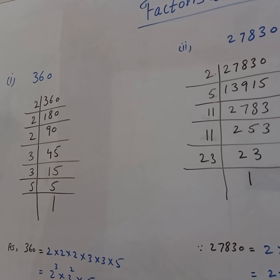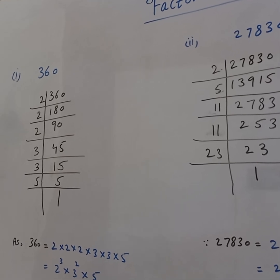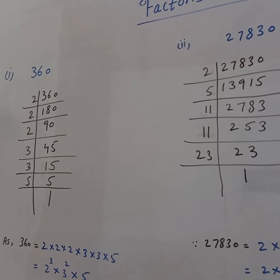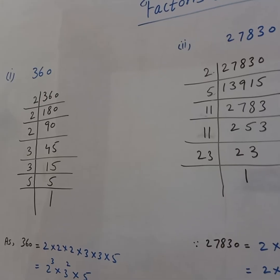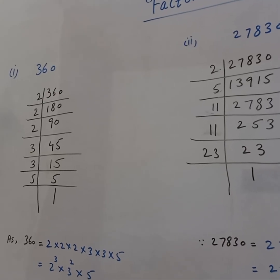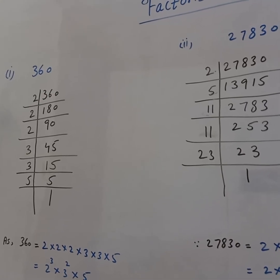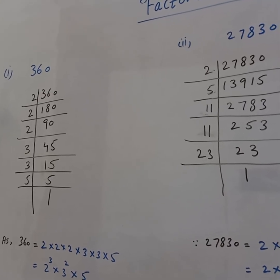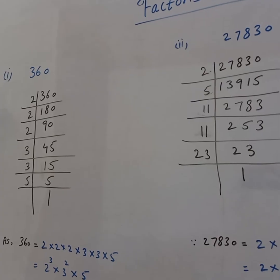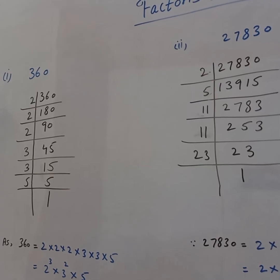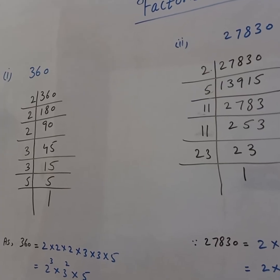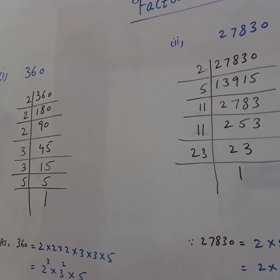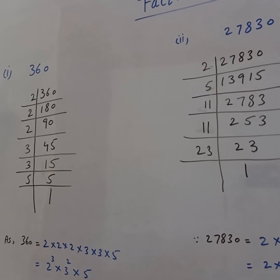Two fours are eight, one left. So two fives are ten, three ones are three, three fives are fifteen, three ones are three, one left. So three fives are fifteen, five ones are five.